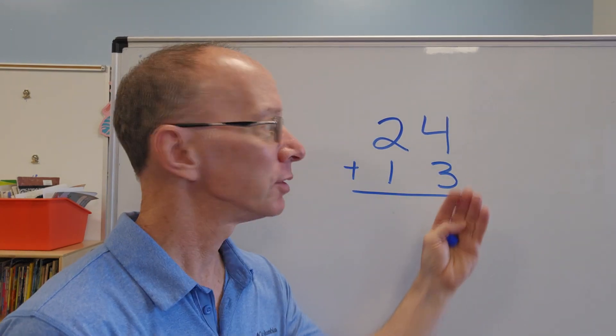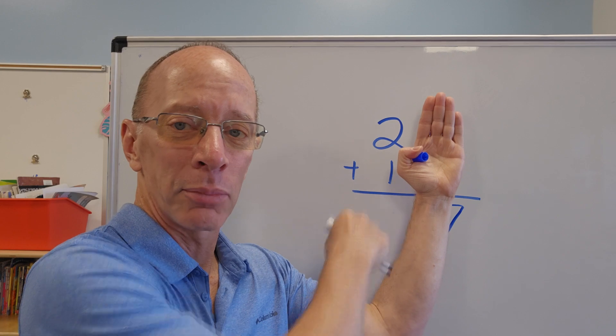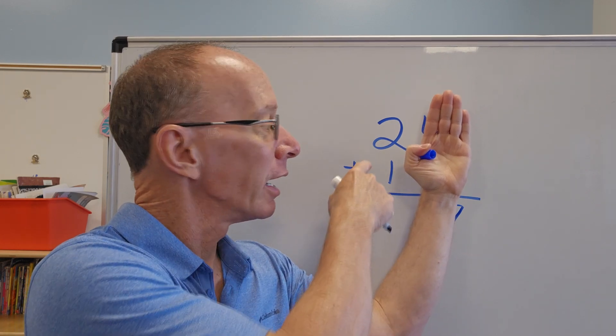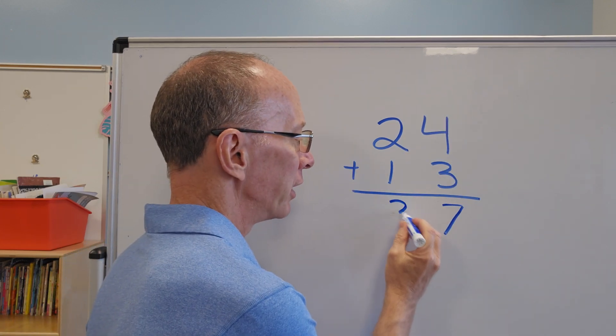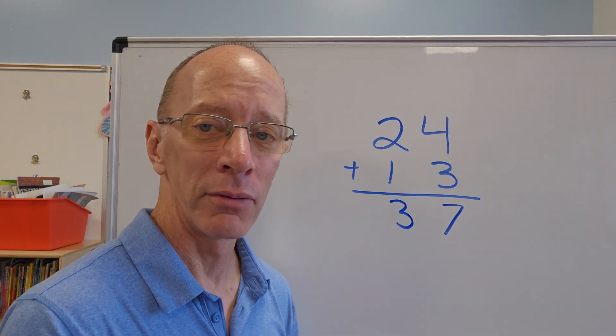And now I move on to the tens. And you can cover that part up if you want to. So I have 2 plus 1 equals 3. Uno, dos, tres. So I have 37. All right, ready to do another one?